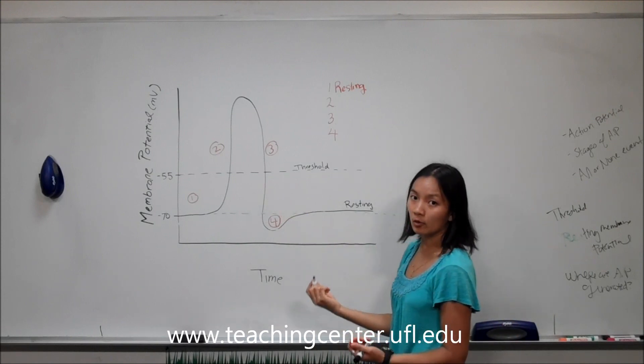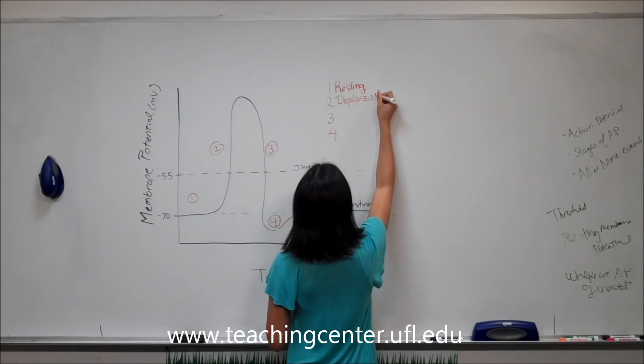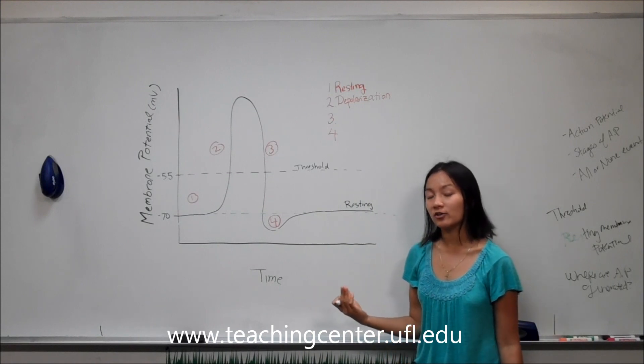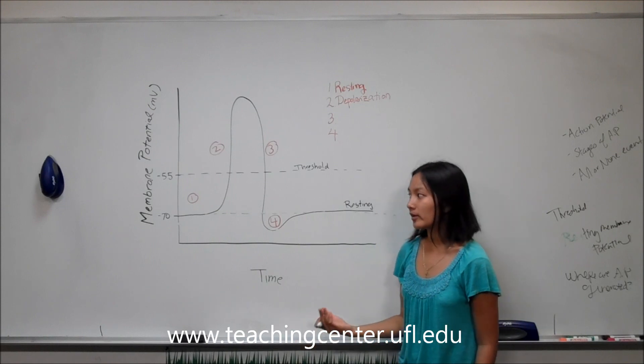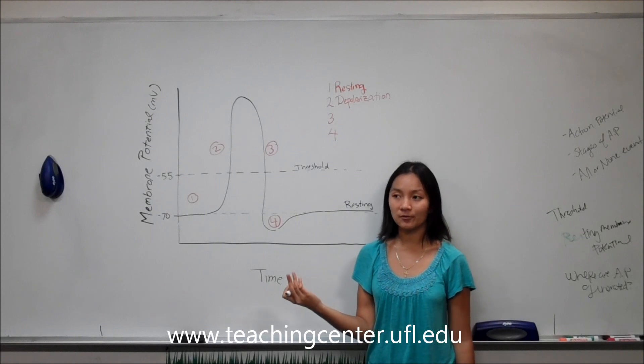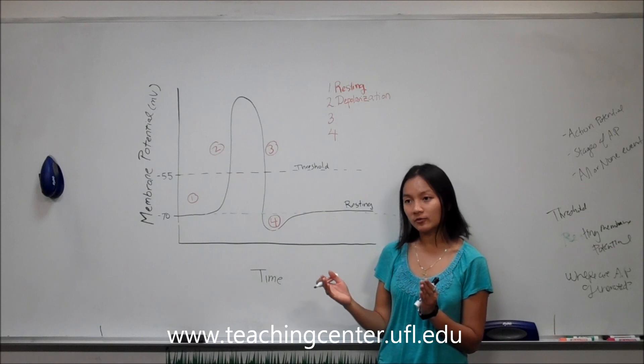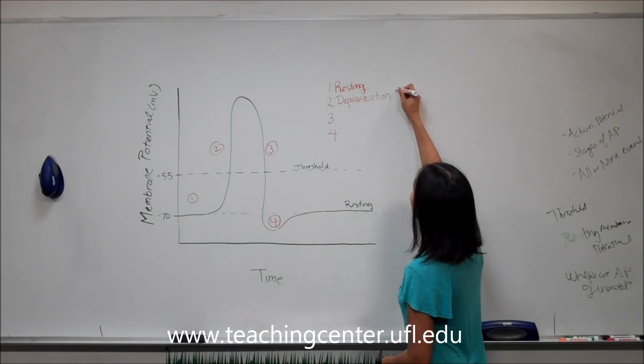So stage two is known as depolarization. During depolarization, you have your sodium channels on your plasma membrane open up. You have to remember that because of the sodium-potassium pump, we have a lot of sodium ions outside of the cell. And sodium is a positive ion. So if a channel opens up for it, it's going to rush all the way inside the cell and make it less negative. So you can write here, sodium channels open.